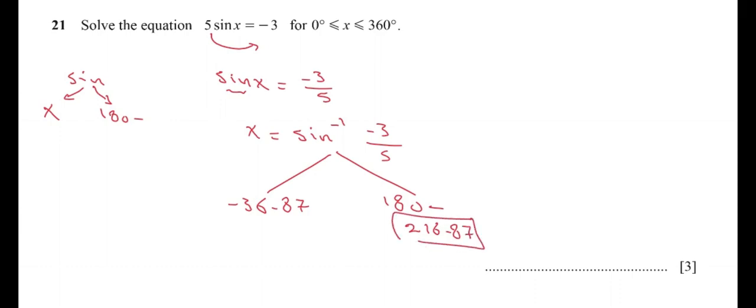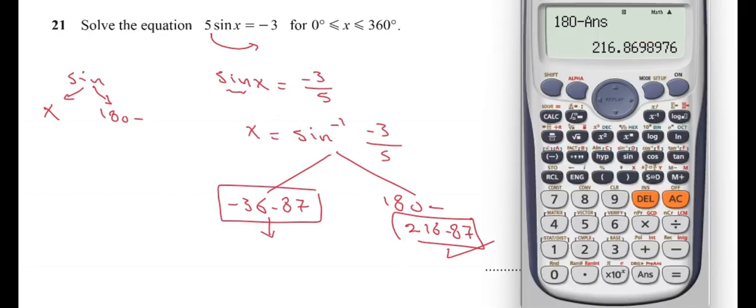Now our range is from 0° to 360°. The answer 216.87° is within range, but -36.87° is negative. We need to write it as a positive number, so we add 360°: -36.87° + 360° to get the positive equivalent of this negative angle.